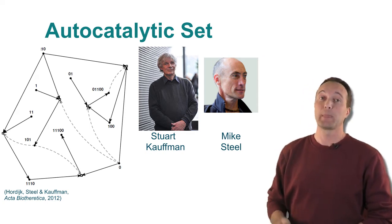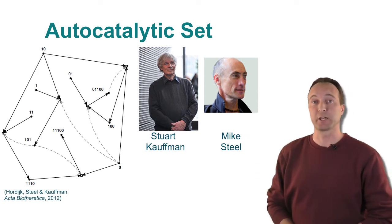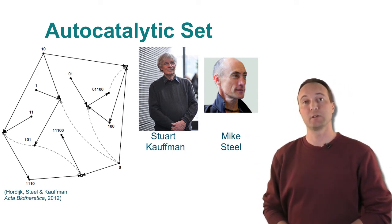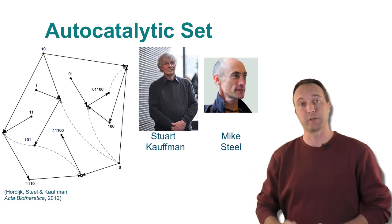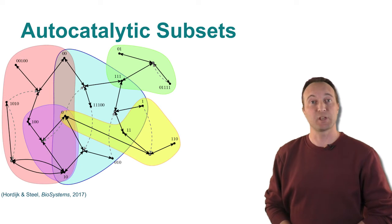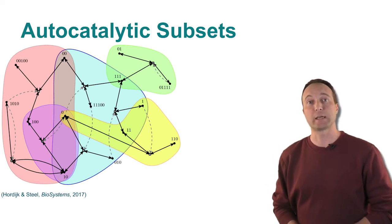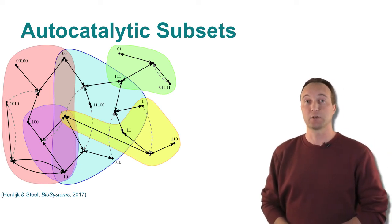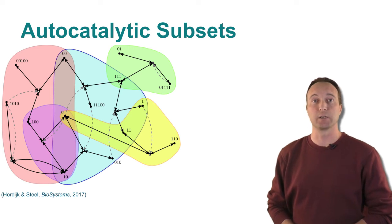For example, this autocatalytic set of five reactions contains two smaller autocatalytic subsets, one of two reactions and one of three reactions. Here is another example from the same bitstring model, which shows an autocatalytic set of eight reactions, containing various smaller autocatalytic subsets, as indicated by the differently colored shapes.